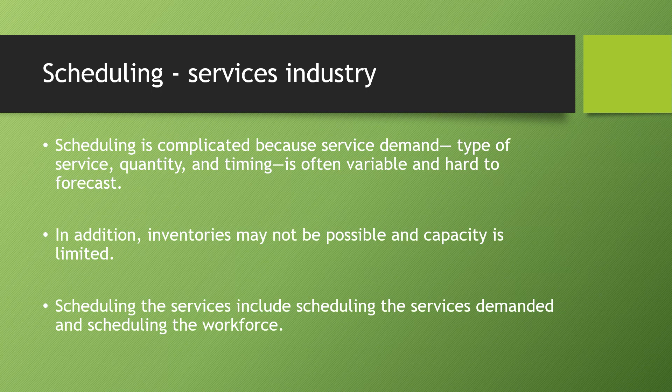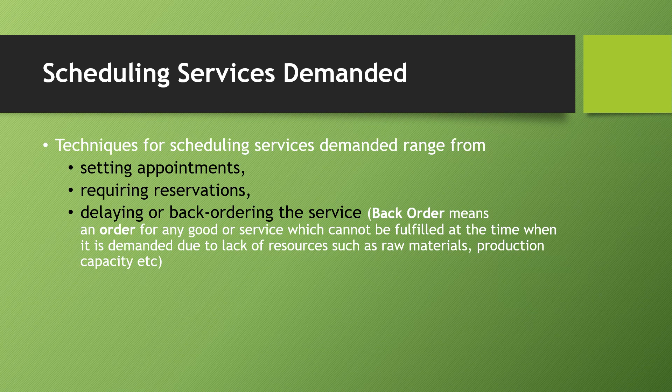In manufacturing, we can hold inventories and use raw materials whenever customers place orders. But in restaurants, hospitals, and other services, carrying inventory is not possible — that option is ruled out. Service scheduling includes two components: scheduling the services demanded, and scheduling the workforce. We'll look at each of these in the next few slides.